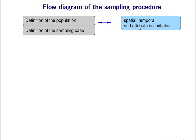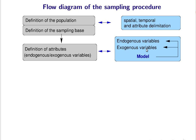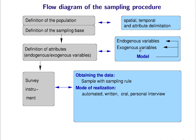In line with the general procedure, you need to define the attributes you want to ask. All endogenous and exogenous variables of a model must be included. You should always also include some socioeconomic properties such as age and gender, because you never know when they will be useful, even if not used in your present version of the model. Then you need to select the survey instrument — how to get the data, whether through random or systematic sampling, and how to sample: measurement, written, oral, personal interview.